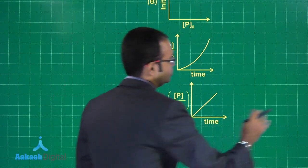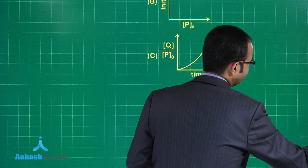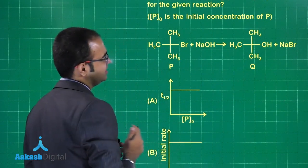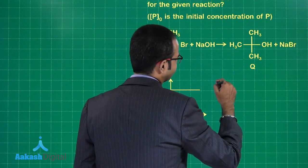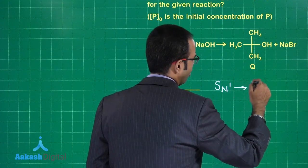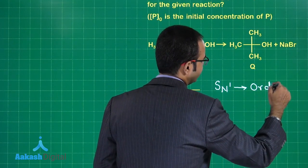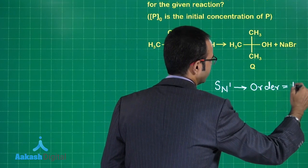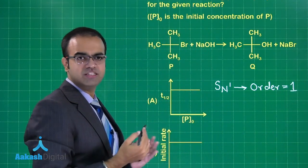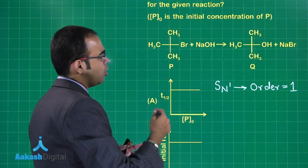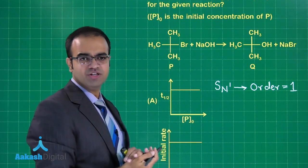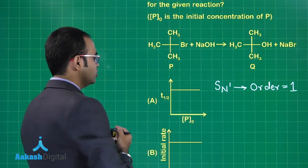First, let us focus on the reaction — what kind of reaction is this? This is SN1, so the order of the reaction is one. If the order is one, then the half-life (t½) is independent of initial concentration, which we all know. So option A is correct.